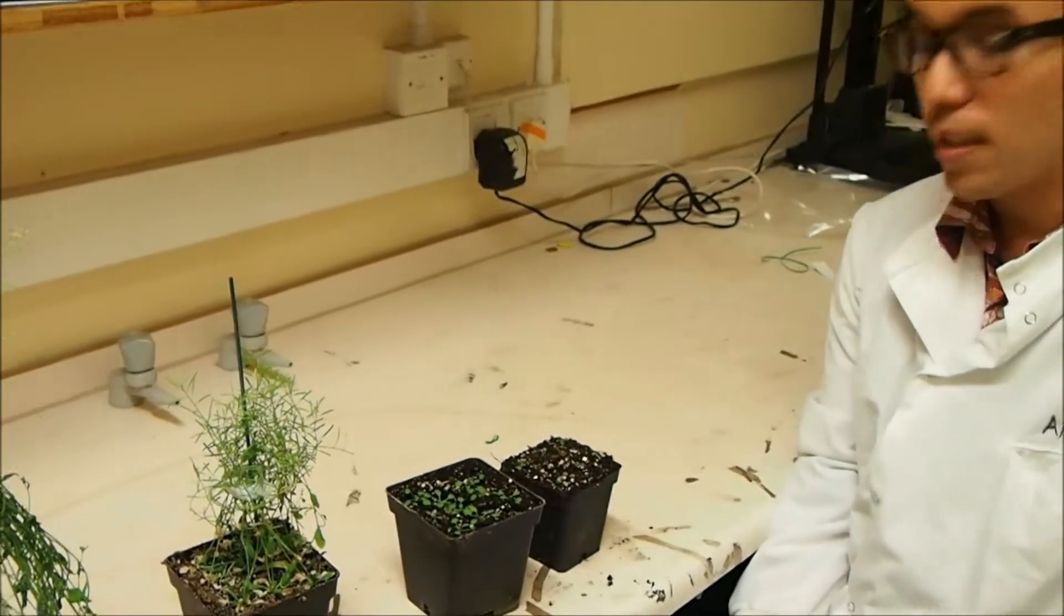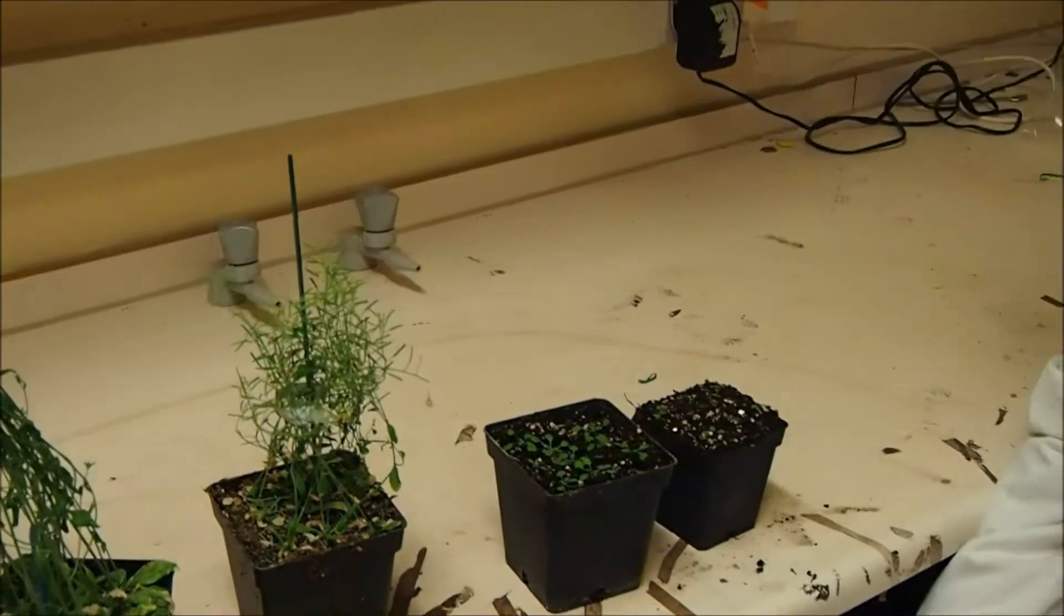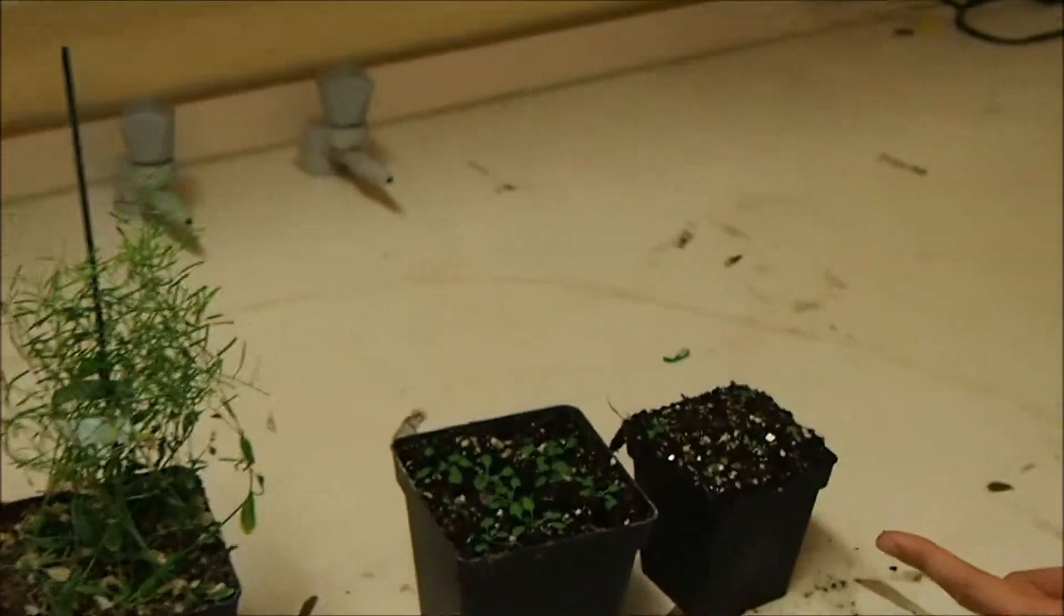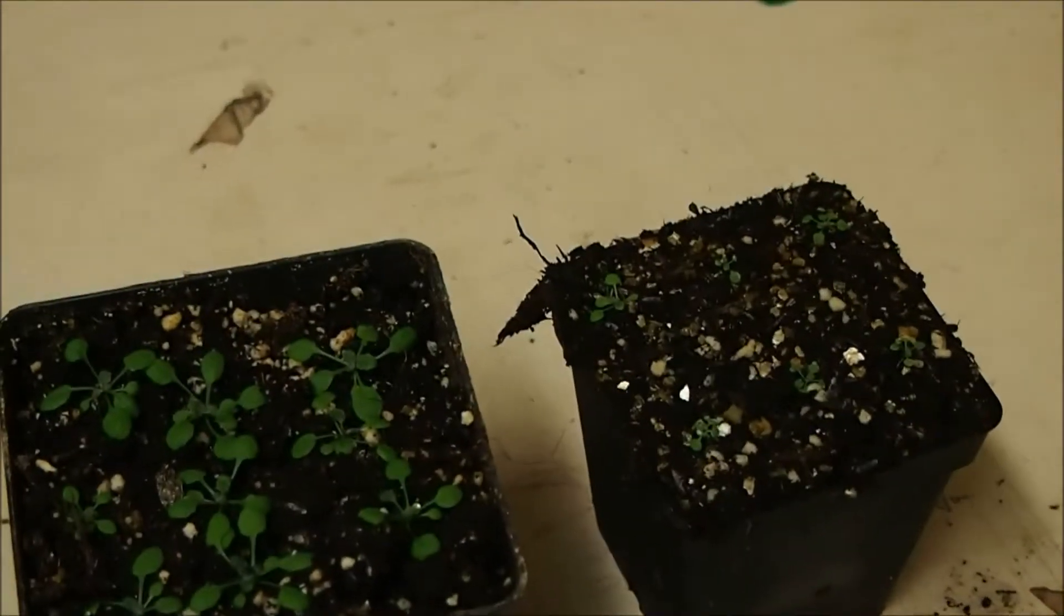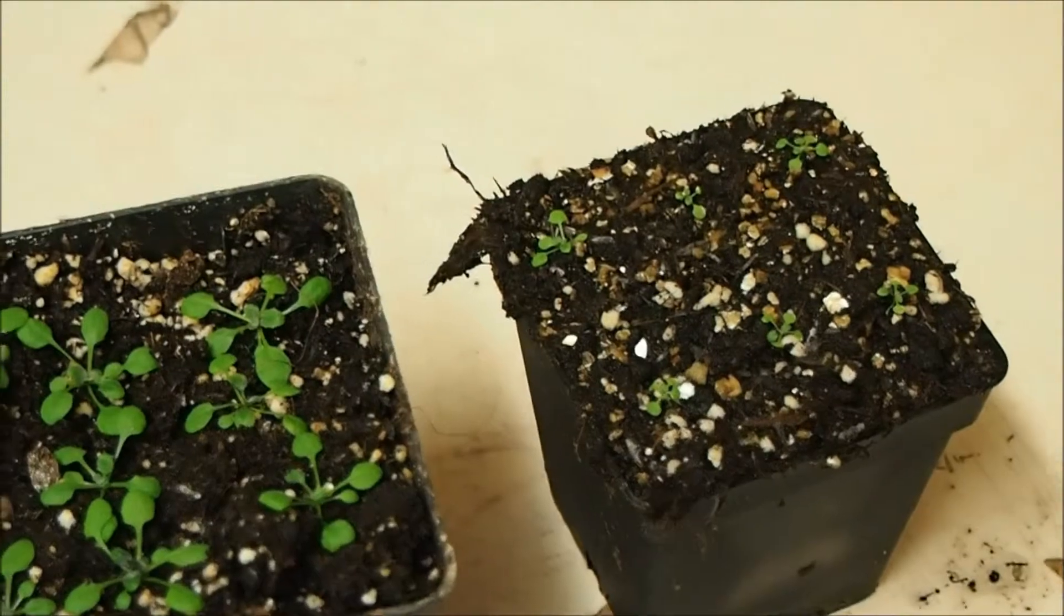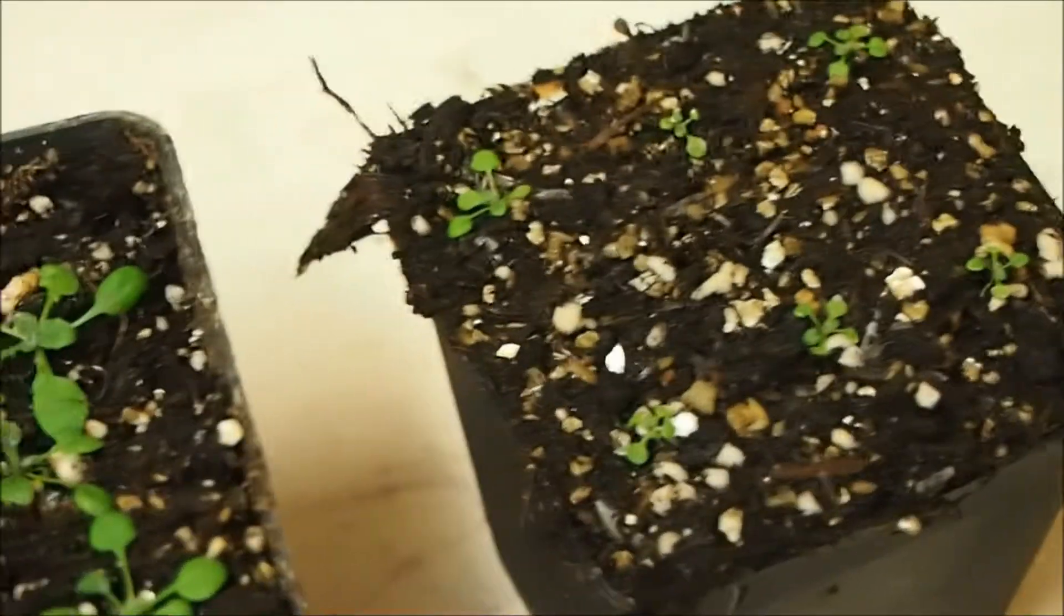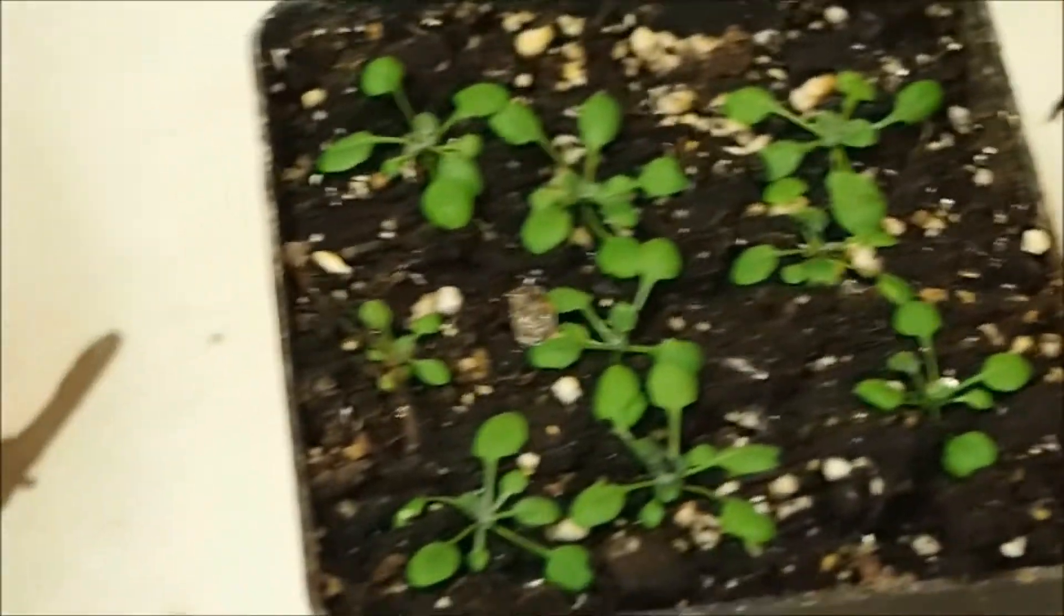So the first one, which is a week-old seedling, looks a bit like this, as you can see in the small pot. They're a bit small, they're kind of frail, but that's just expected. The next one we're going to look at is a two-week-old Arabidopsis seedling.